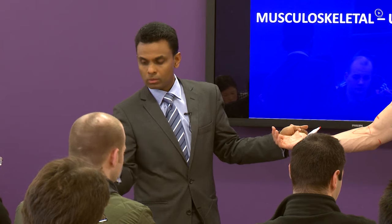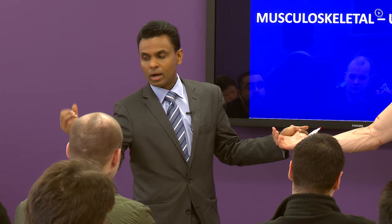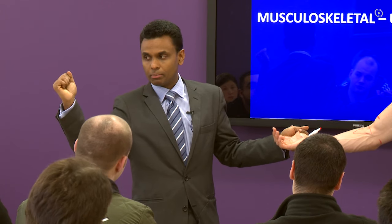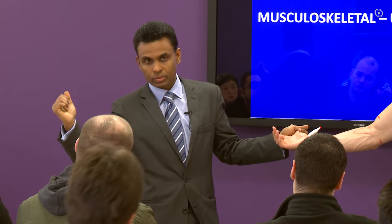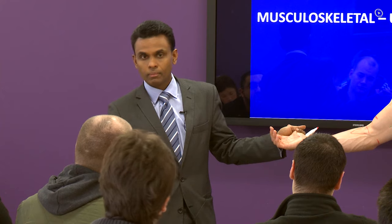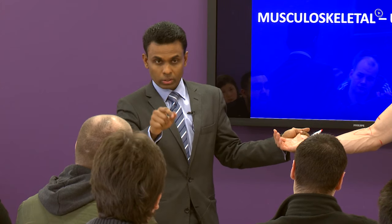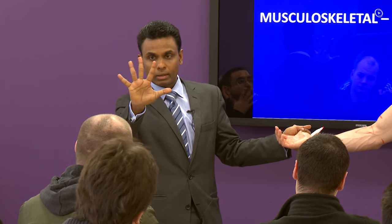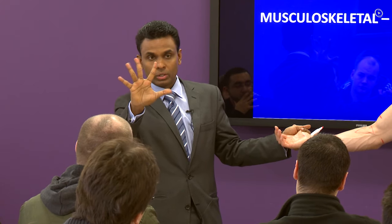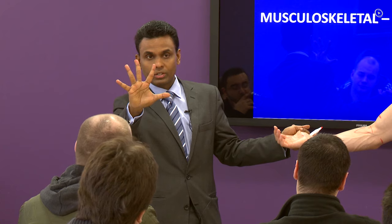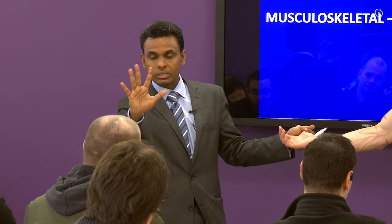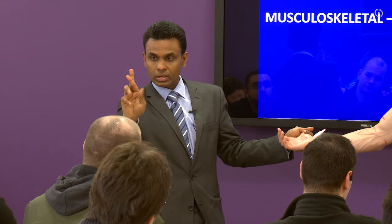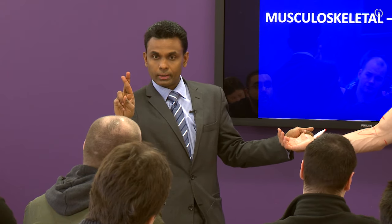Flexion of the medial two digits — so you can ask them to make a fist; that may be lost. What else? Scissoring — spreading the fingers. So that is abduction and adduction of the fingers, as well as scissoring.